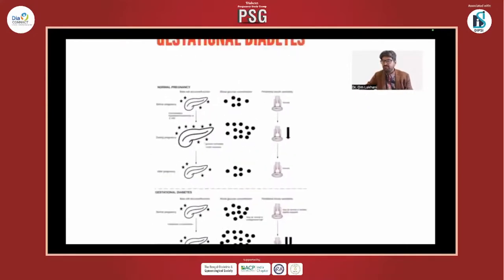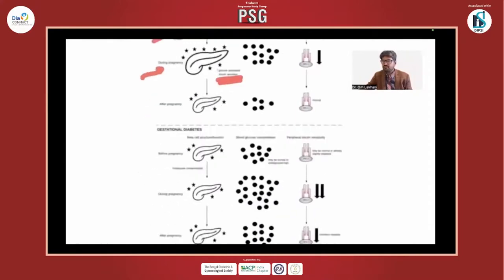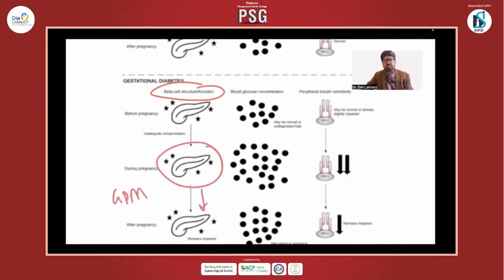This is explained very beautifully in a cartoon. In a normal pregnancy, before pregnancy there is a compensatory increase of beta cell function. During pregnancy, there is increased glucose production and increased insulin resistance. After pregnancy, things come back to normal. But in women with gestational diabetes, there is poor beta cell function to begin with, and during pregnancy the increased insulin resistance cannot be matched by the beta cell, leading to gestational diabetes mellitus. This problem often normalizes again after delivery, because insulin resistance comes down immediately after delivery.